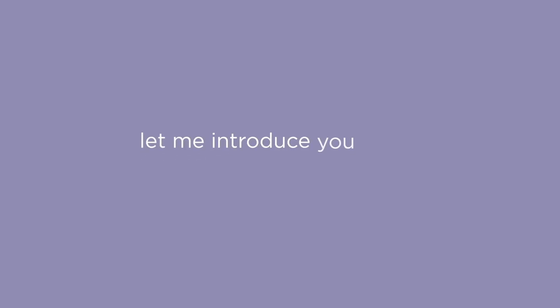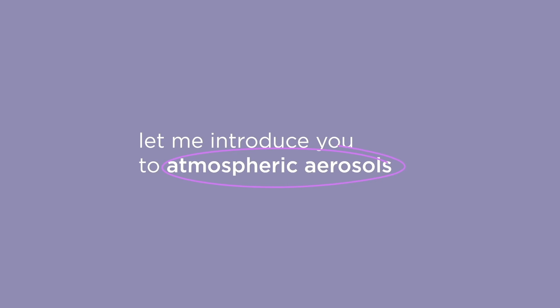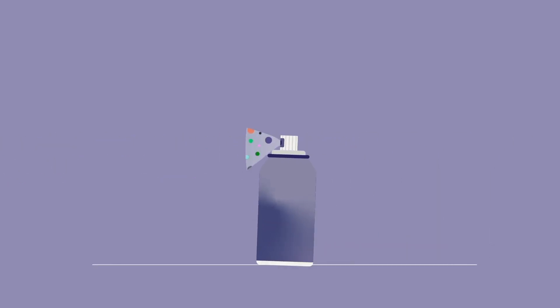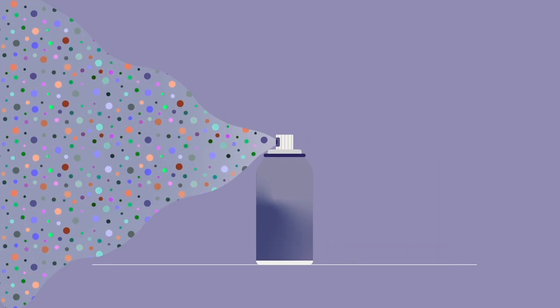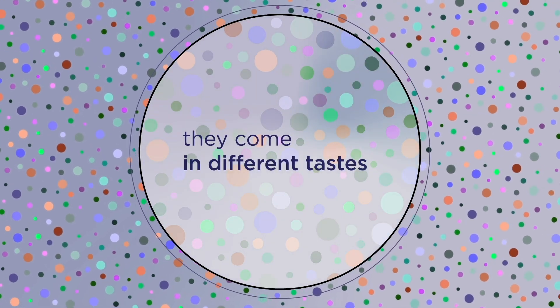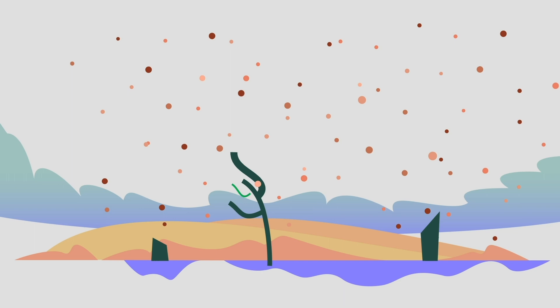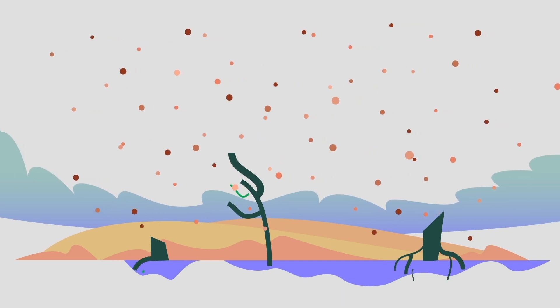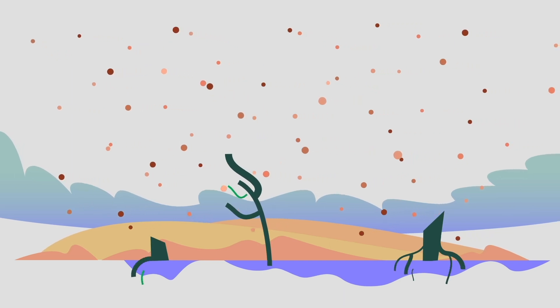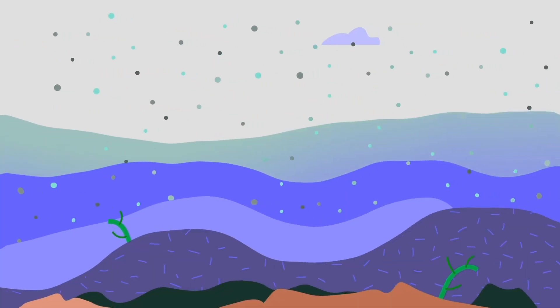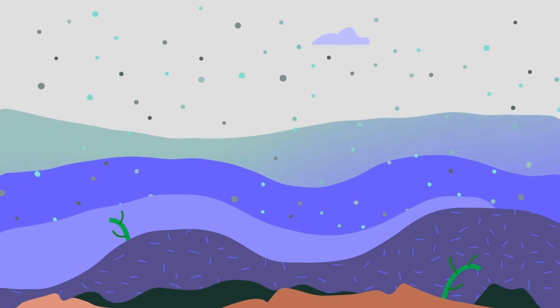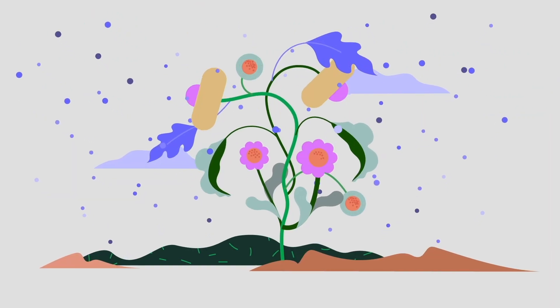Let me introduce you to atmospheric aerosols. They are not from spray cans — they are small, solid particles floating in Earth's atmosphere. They come in different types. The bigger ones could be either dust from deserts, sea salt from ocean spray, or pollen from flowers.